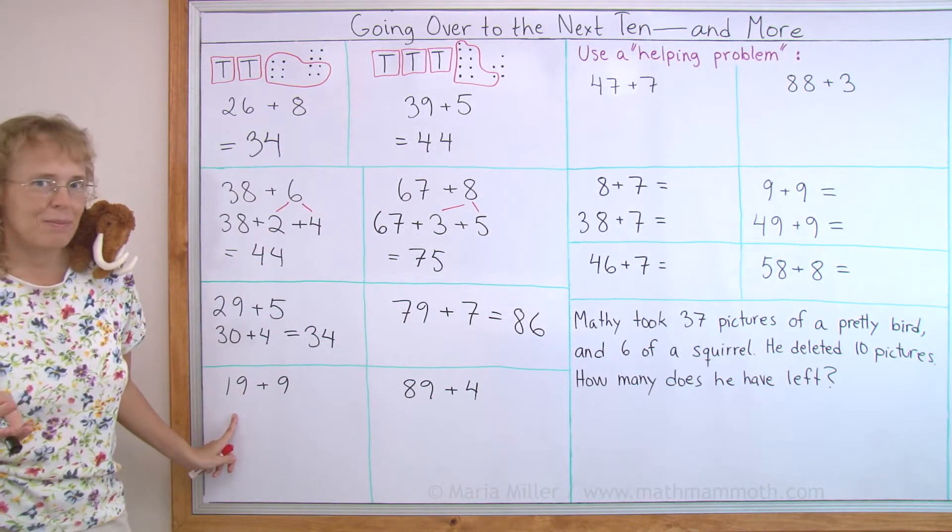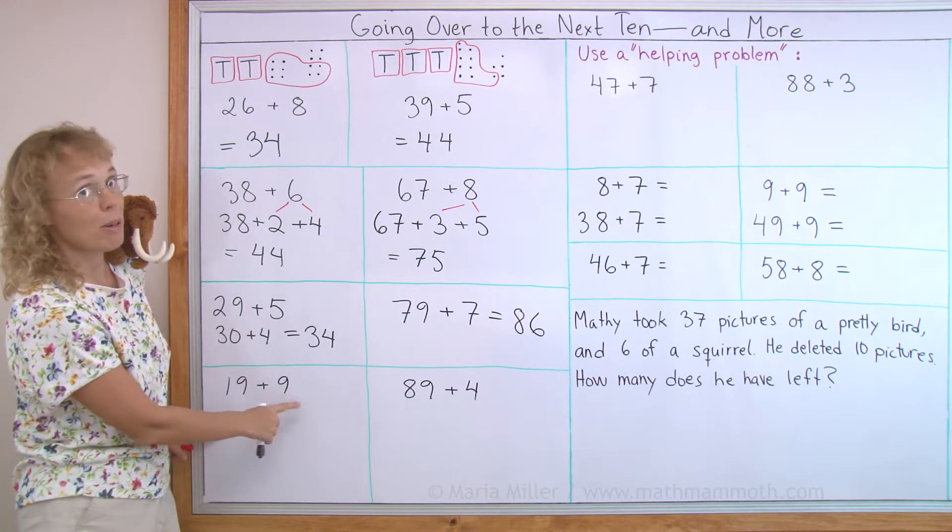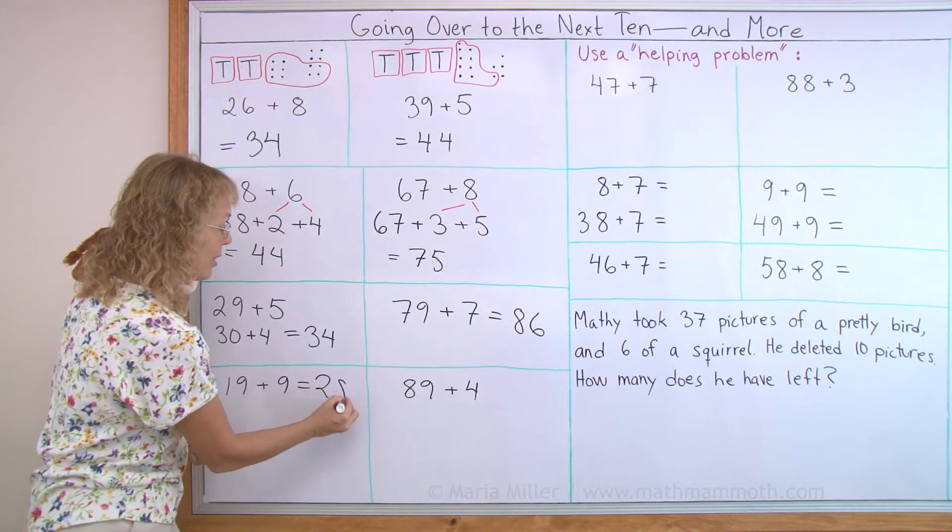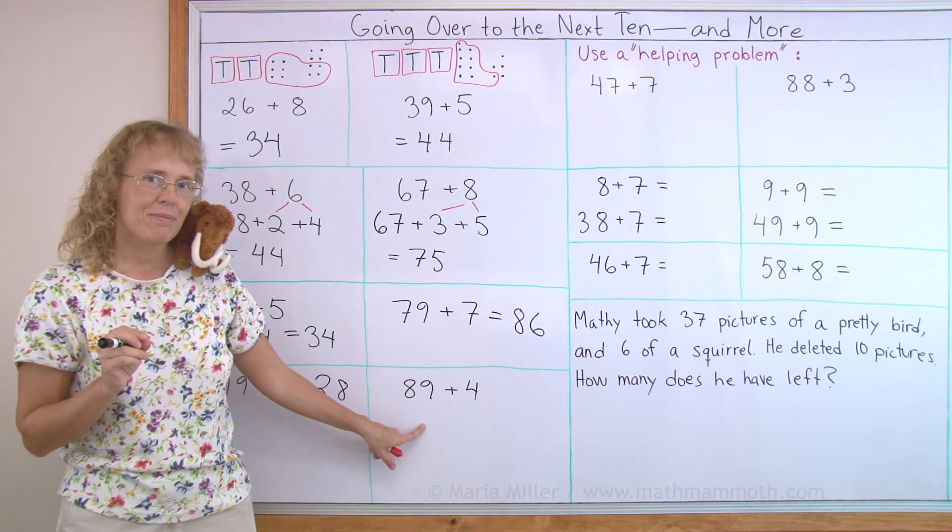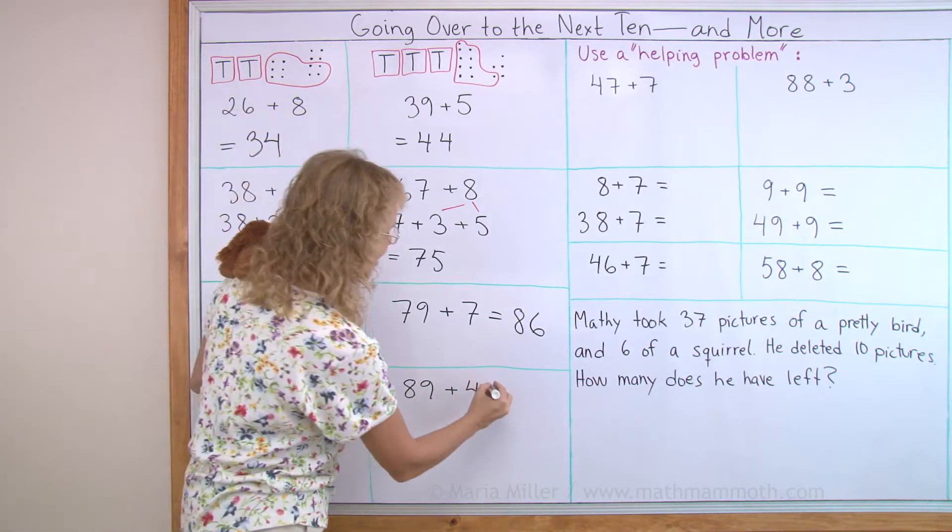Once more, 19 plus 9. 19 becomes 20, this becomes one less. 20 and 8, which is 28. Try this one on your own. 90 here, 3 here. 93.